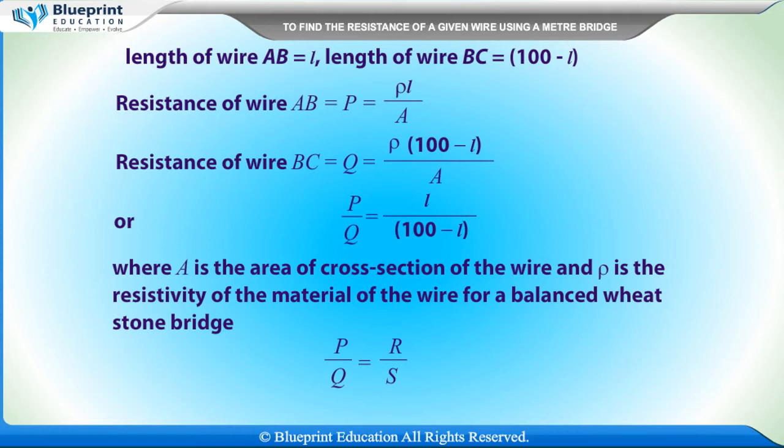The resistance of wire AB is equal to P = ρL/A, and the resistance of wire BC is equal to Q = ρ(100−L)/A, so P/Q = L/(100−L), where A is the area of cross-section of the wire and ρ is the resistivity of the material of the wire. For a balanced Wheatstone bridge, P/Q = R/S.